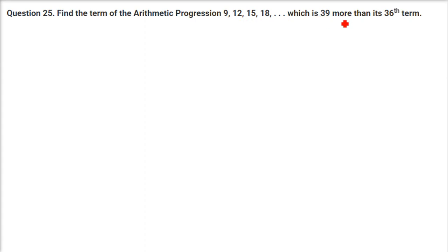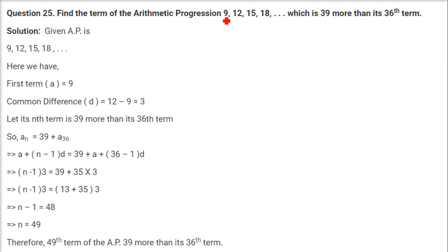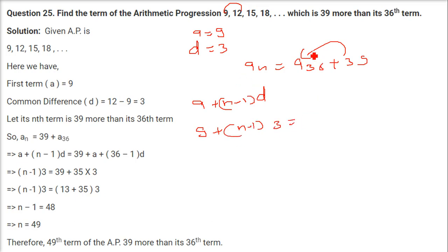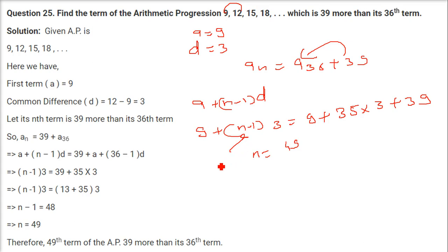Find the term of the AP 9, 12, ... which is 39 more than its 36th term. A = 9, D = 12 − 9 = 3. Setting up: A + (N−1)×D = A + 35×D + 39, that is 9 + (N−1)×3 = 9 + 35×3 + 39. Solving gives N = 49. So the 49th term is 39 more than the 36th term.